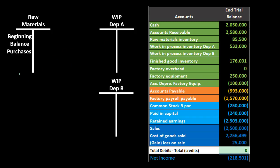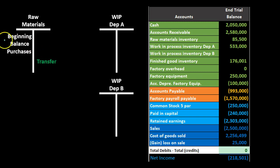Starting with materials, you can track them similarly to inventory for a merchandising company — beginning materials, purchases, and ending materials — allowing you to calculate what materials were used. We will credit the raw materials account when requisitioning materials to work in process; since it's an inventory account with a debit balance, crediting it causes it to decrease.